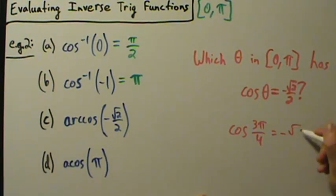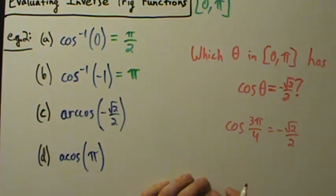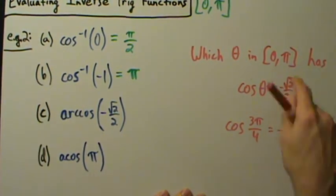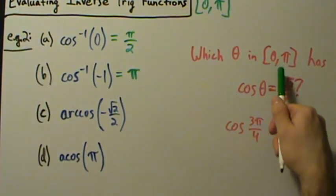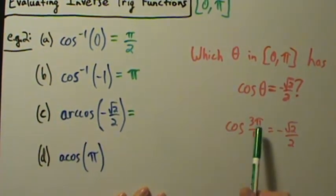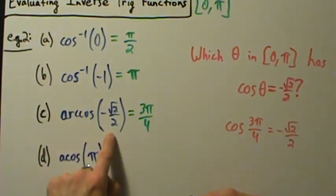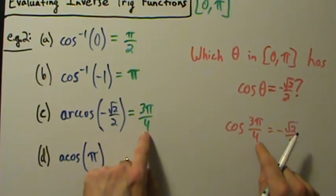Cosine of 3 pi over 4 equals negative root 2 over 2. There are infinitely many numbers whose cosine is negative root 2 over 2 — such as 3 pi over 4, 5 pi over 4, negative 3 pi over 4, negative 5 pi over 4, and all angles coterminal with those — but 3 pi over 4 is the only one in the interval 0 to pi. So the answer is 3 pi over 4.